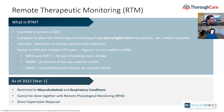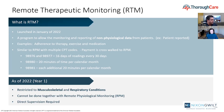For those unfamiliar with the term 'crosswalked,' it's CMS's way of saying this program will be paid similarly to another program. The 16-readings code for RTM is paid the same way as the RPM one, and the 20-minute time code is paid the same way as RPM's. Now there are some differences to RTM. In year one, the program was restricted to musculoskeletal and respiratory conditions, it could not be done together with remote physiological monitoring, and direct supervision was required.